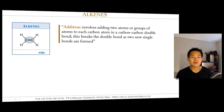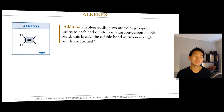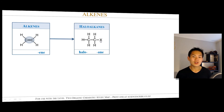As for the reactions of alkenes, alkenes undergo something called an addition reaction. An addition reaction is when you add 2 atoms, or groups of atoms, to each carbon atom in a carbon-to-carbon double bond. It breaks the double bond as 2 new single bonds are formed.